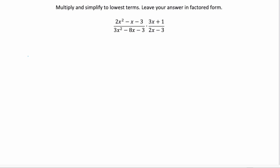Remember the easiest way to multiply these together is to factor them first. So let's start with this first numerator, 2x squared minus x minus 3. Here we're going to have to use the key number method and then factor with grouping.